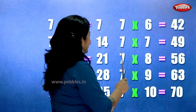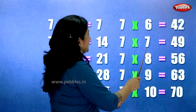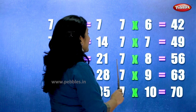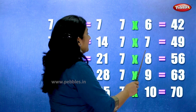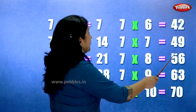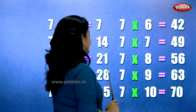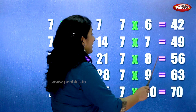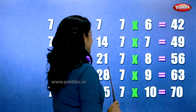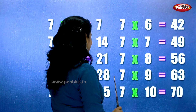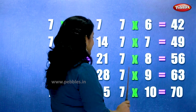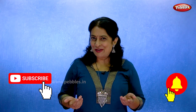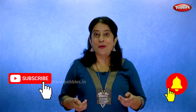7 sevens are 49. 7 eights are 56. 7 nines are 63. 7 tens are 70. Thank you for watching the video.